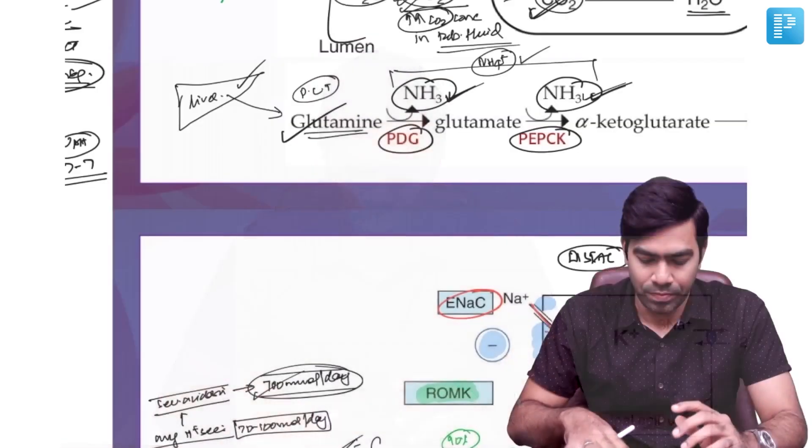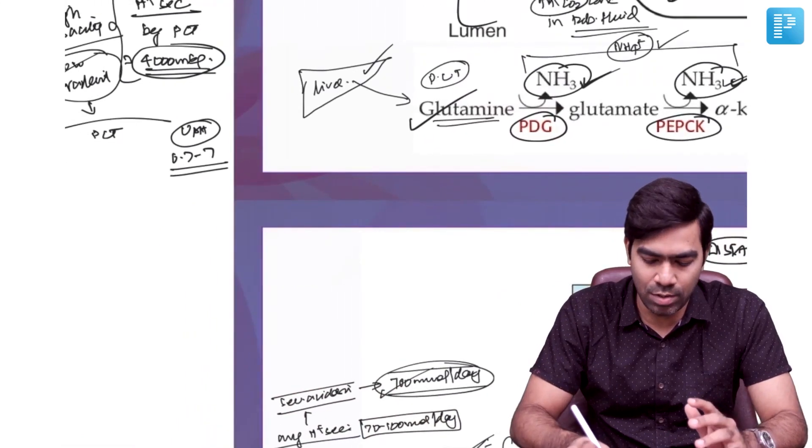The limiting factor in metabolic acidosis is H+ secretion itself. The distal nephron — especially the alpha intercalated cells — is the most important site for correcting metabolic acidosis. The H+ secreting capacity of the alpha intercalated cell, even at its maximum, is 700 millimoles per day. That is the limiting factor, not ammoniagenesis.